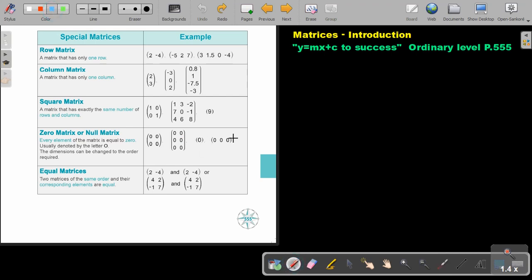So, this will be equal. Then they just put a zero. And then this one, the last one, equal matrices. Two matrices of the same order and their corresponding elements are equal. So, it's not just the order. Also, the elements must be equal. Can you see? Exactly the same. Okay.